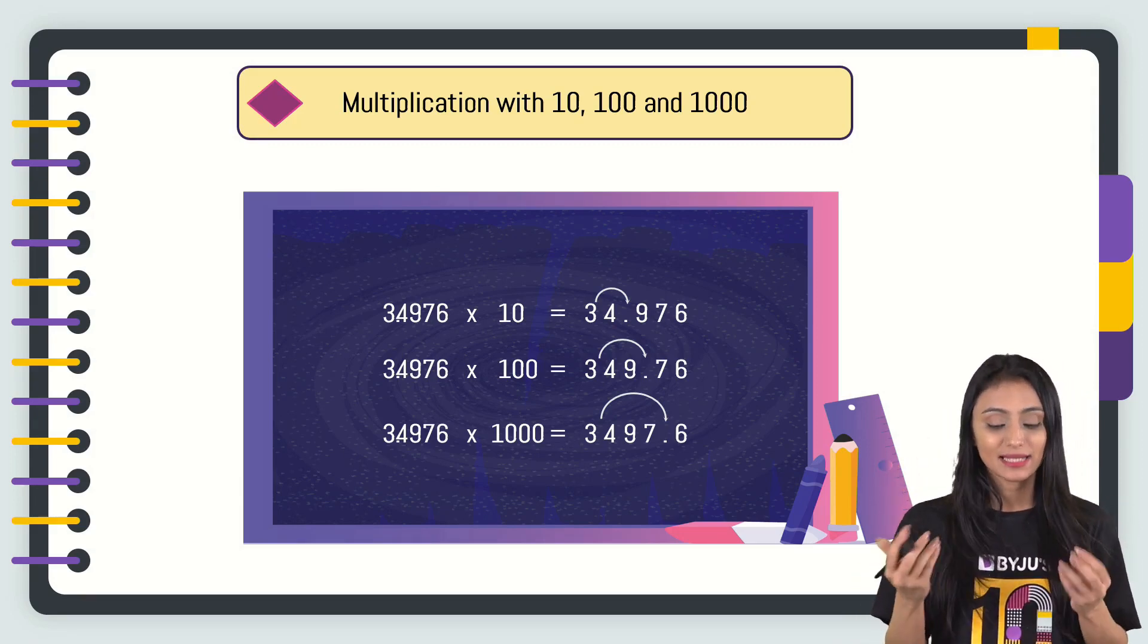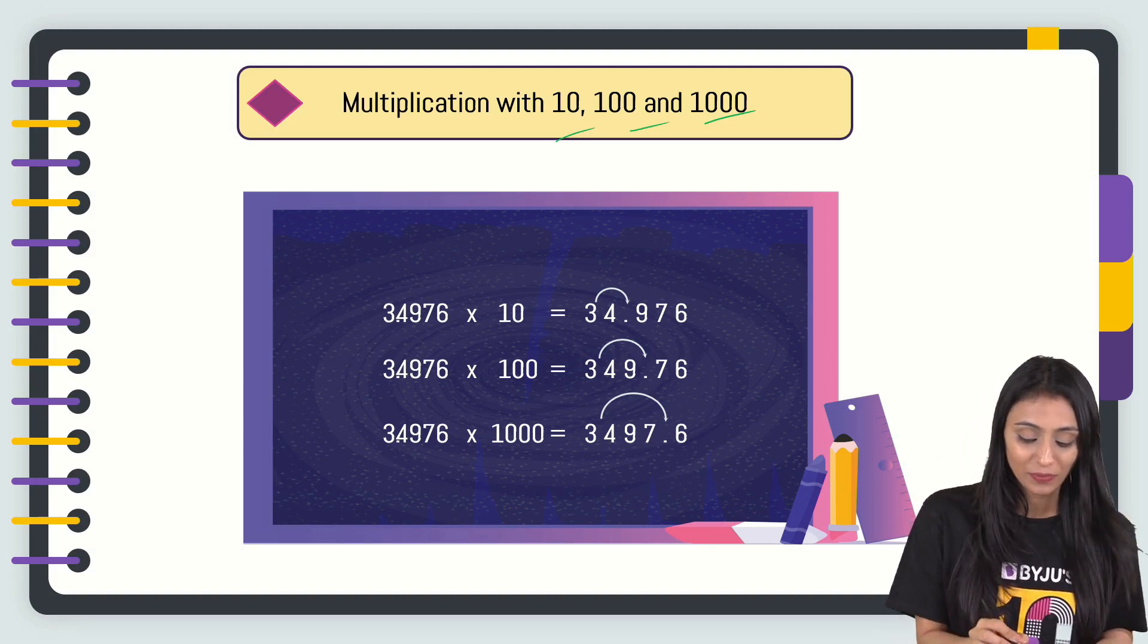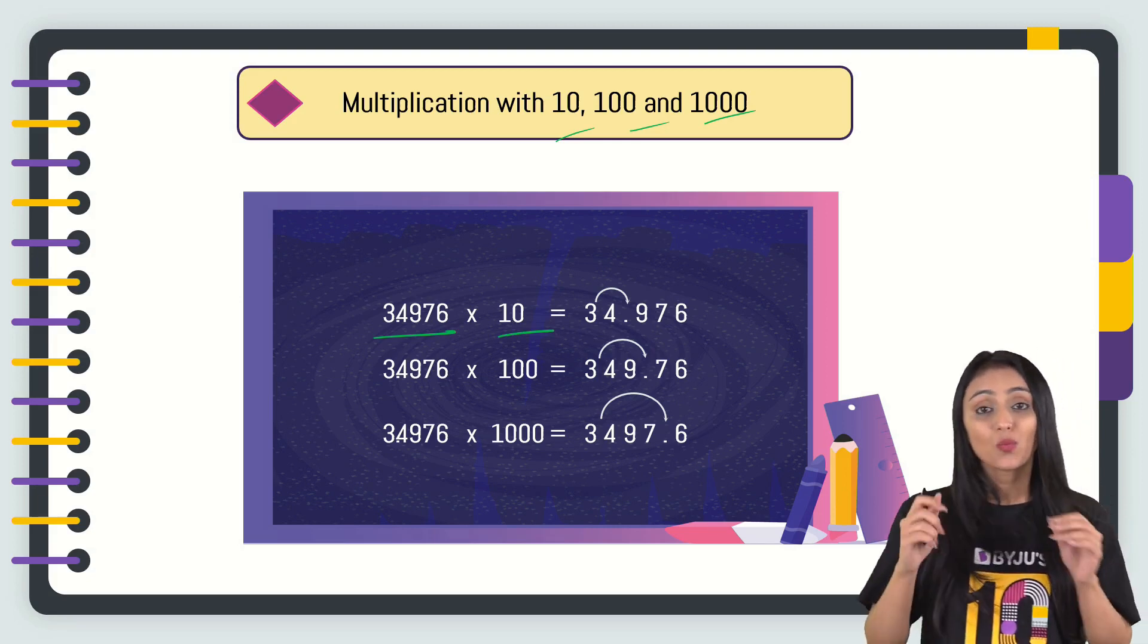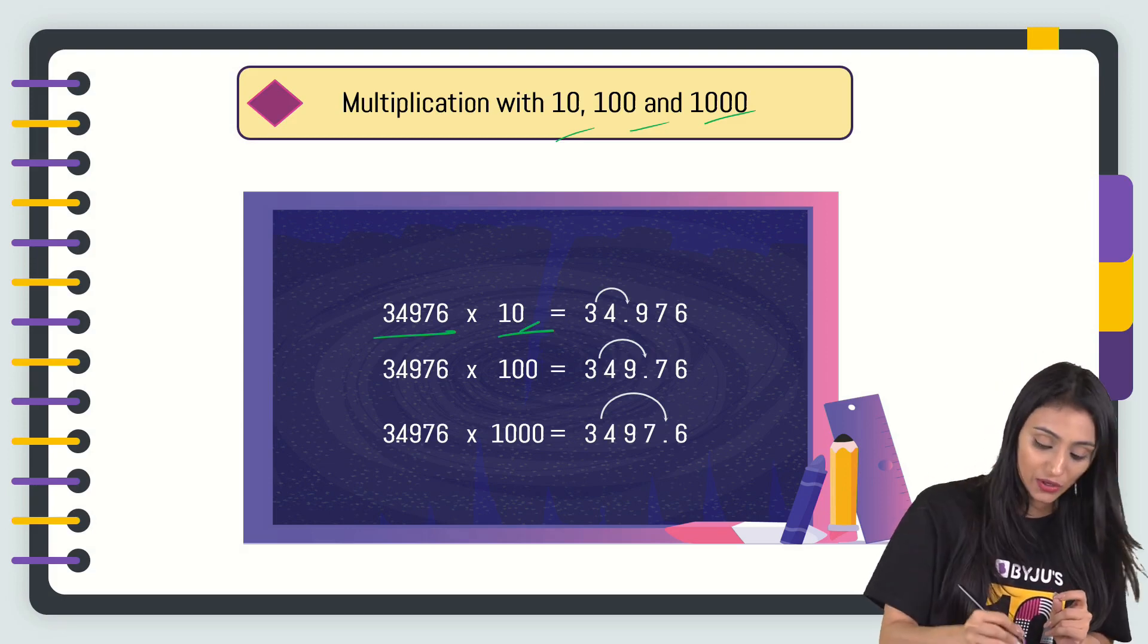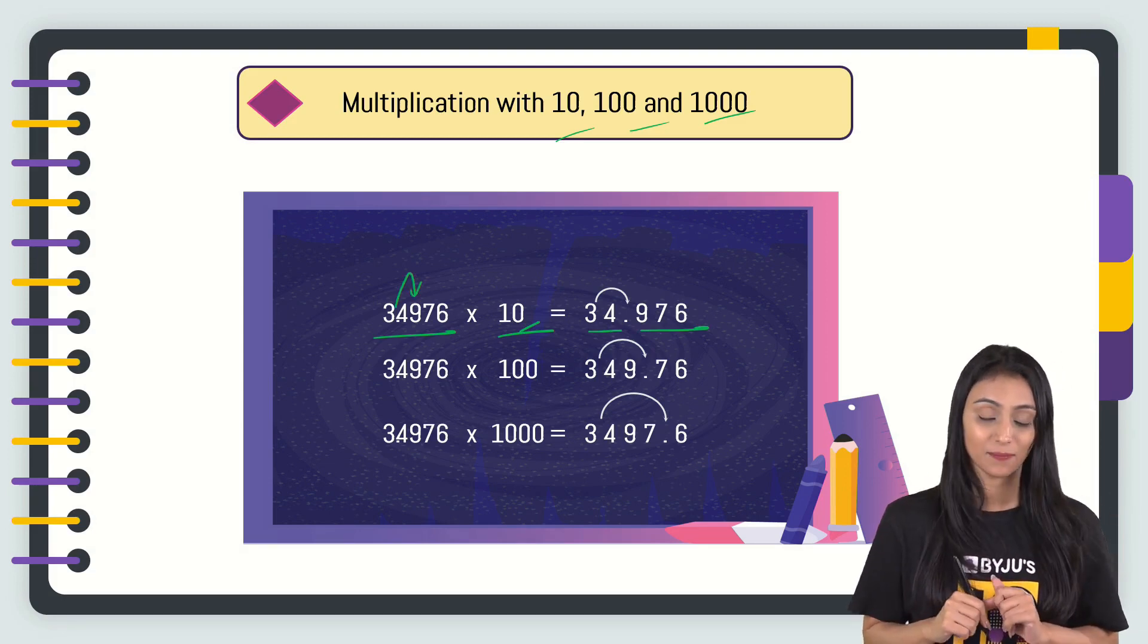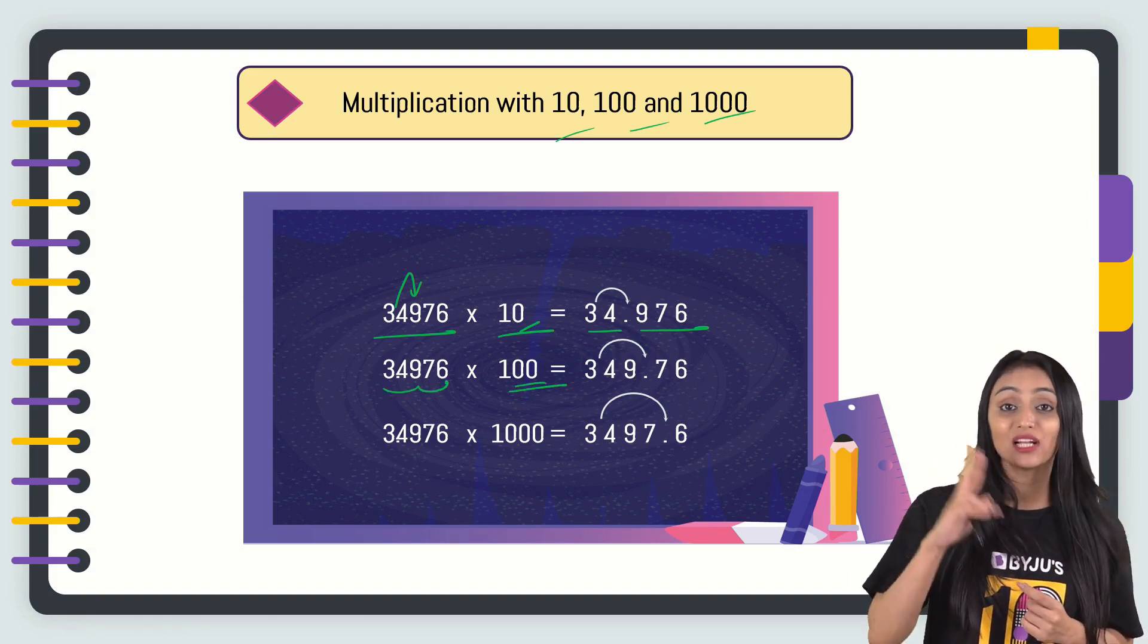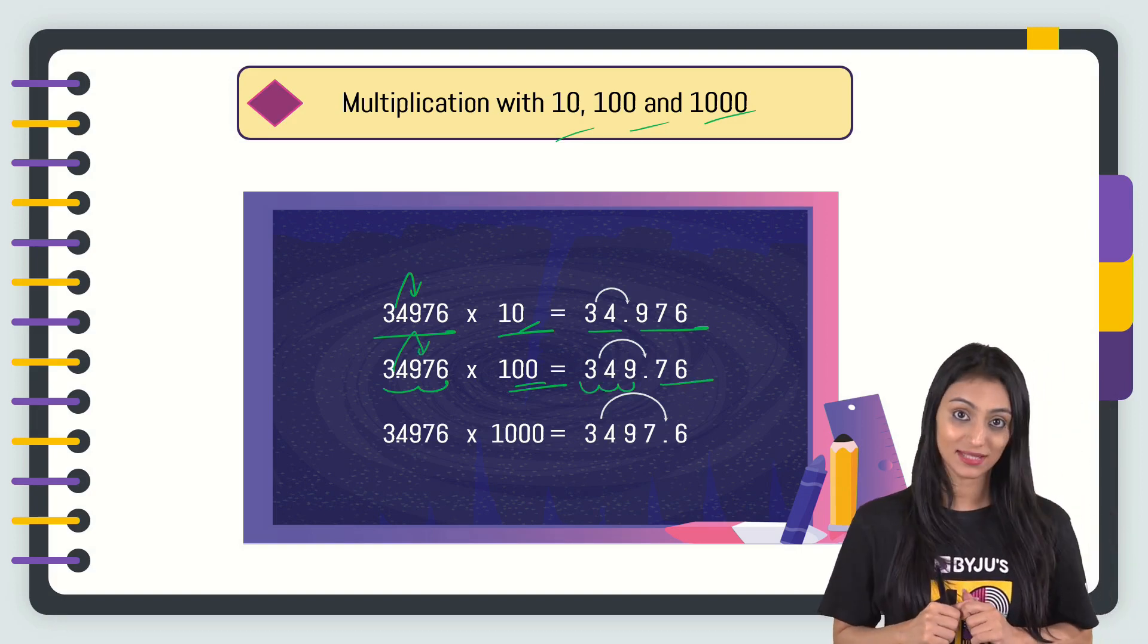Now what if I have to multiply a decimal number with 10, 100, and 1000? I'll pick up only one example for all of them. We have 3.4976 and I have to multiply that with 10. Whenever we are multiplying, we shift towards right. Remember this thing. Since there is only one zero here, I'll shift one place towards right. That's going to be 34.976. The same number here, I'm multiplying with 100. This time there are two zeros. I'll shift two places towards the right. That's going to be 349.76.